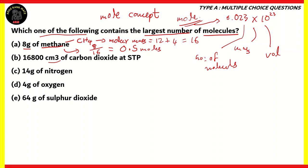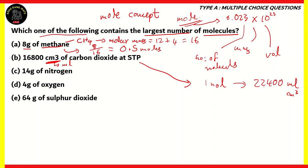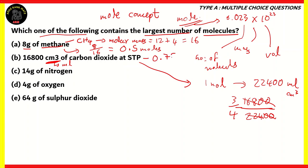Option B: 16,800 cm³ of carbon dioxide at STP. The unit cm³ is the same as milliliters. One mole of any element or compound has a volume of 22,400 mL at STP. So we divide 16,800 by 22,400. Simplifying, 168 and 224 can both be divided by 56, giving us 3/4, which is 0.75 moles of carbon dioxide.